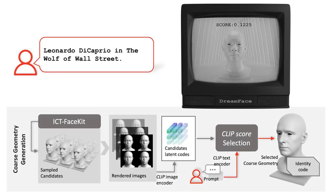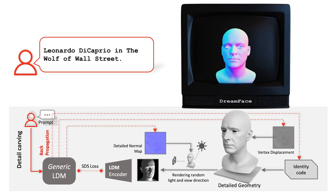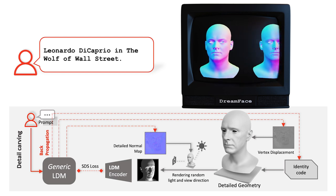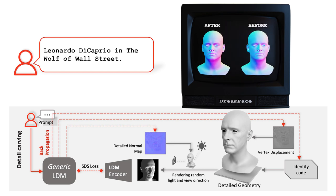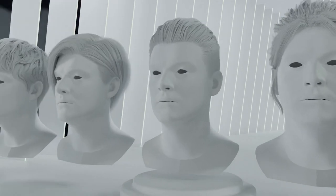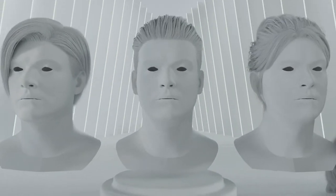We propose a CLIP-based selection framework that first chooses the optimal coarse geometry from randomly sampled candidates and then carves geometric details to make the head model more consistent with the text prompts. Similarly, with the text prompts, we can also select hairstyles and colors.